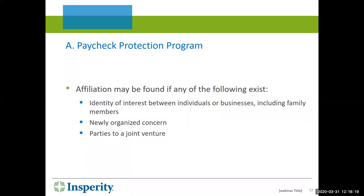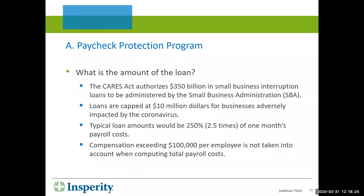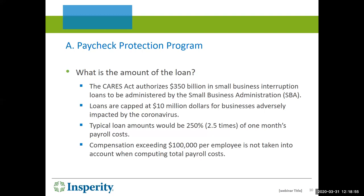How much can you borrow? The CARES Act authorized $350 billion in these interruption loans. For any individual business, $10 million is the maximum. The loan proceeds for any individual company is equal to 250% of the average month's payroll costs — two times 2.5 months — or two and a half months' payroll costs. In computing that, any compensation for an employee who makes over $100,000 is not taken into account. So if you have an employee who makes $160,000 total compensation, you would count $100,000 toward her annual salary, back it up to a month, and multiply it times 2.5.